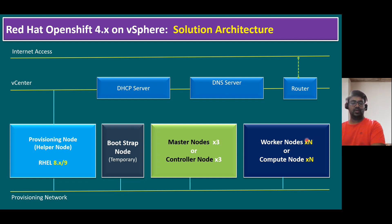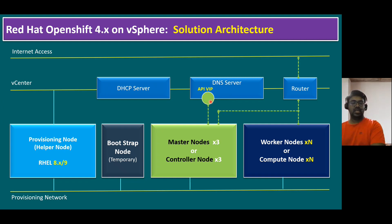Once the master nodes are deployed, one of the master nodes helps provision worker nodes as well. Worker nodes, also called compute nodes, have no minimum limit — you can provision three or more. Once master and worker nodes are provisioned, the bootstrap node is automatically removed. Within our DNS server, we need to configure static DNS records: the API VIP and the ingress VIP. The router connects to master and worker nodes and to the internet for updates and upgrades. The API VIP connects to master nodes and ingress VIP connects to worker nodes.